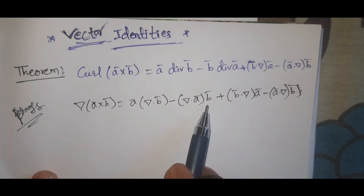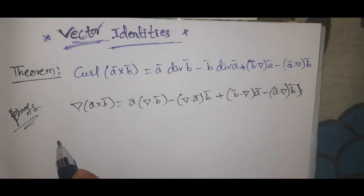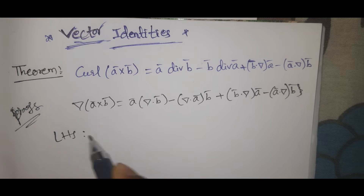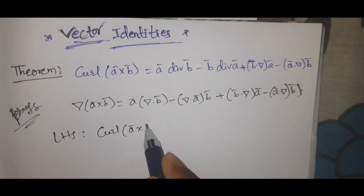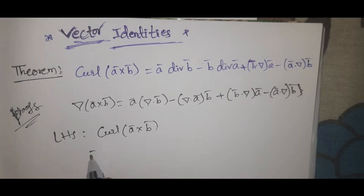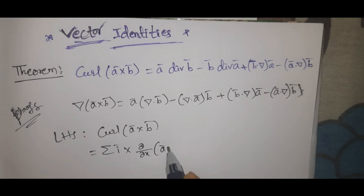Now LHS equals curl of (ā × b̄). We express this as summation of i̅ cross ∂/∂x into (ā × b̄).